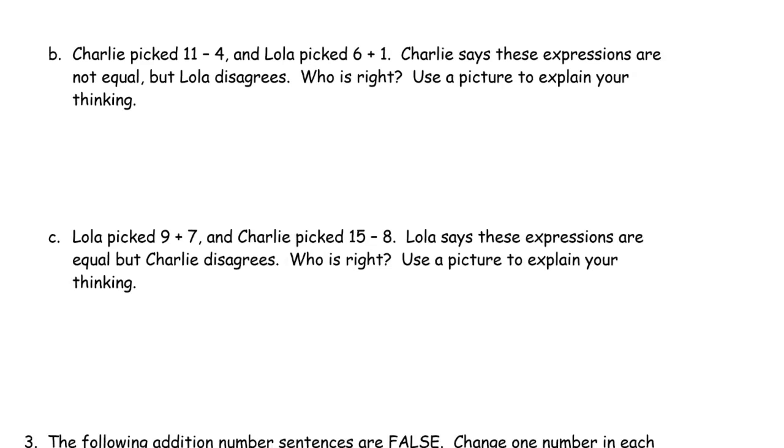Charlie picked 11-4, so that's his expression card, and Lola picked 6+1. Charlie says these are not equal. Lola disagrees. Who is right? It says use a picture to explain your thinking. So we're going to draw pictures to do this. So we have the 11-4. That's 1, 2, 3, 4, 5, 6, 7, 8, 9, 10, 11. We cross out 4. Right? So we know we're going to have these left. That's going to be 6 and 1 more, so that's 7. This is the 11-4. And we'll label it with that expression card.